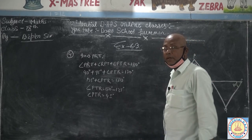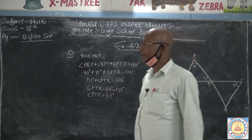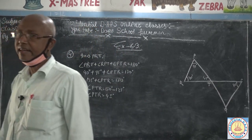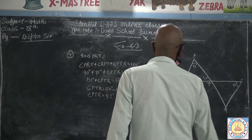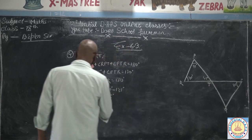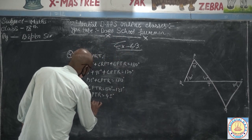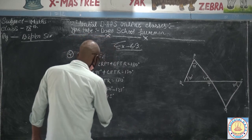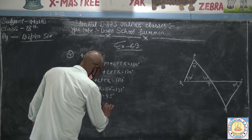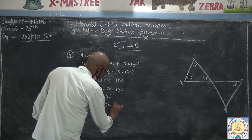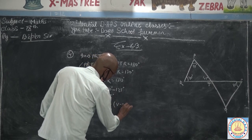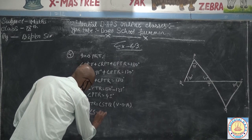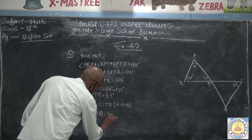We know if two lines intersect each other then vertically opposite angles are equal. So angle PTR is equal to angle STQ — vertically opposite angles. Therefore angle STQ is equal to 45 degrees.